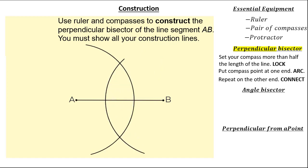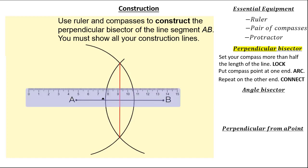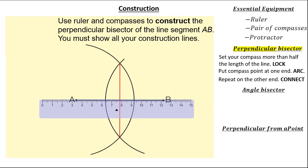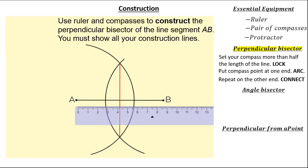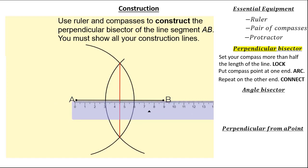We simply arc above and below. Then our final step is super simple — all we need to do is connect from those points of intersection. You can get your ruler and measure to check the perpendicular bisection. Looking at our line, it's around about 9 cm, and you can see it's done an accurate perpendicular bisection.